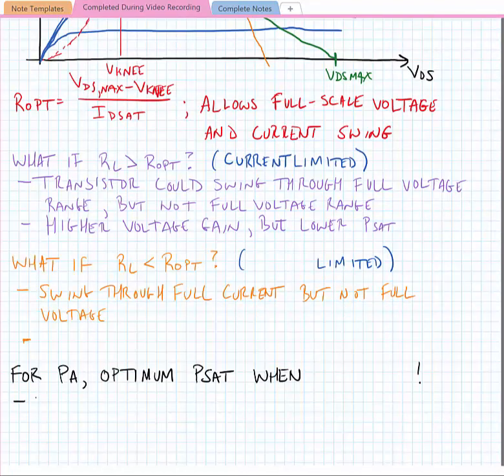Now the load resistance is less than the optimum, so you might also expect that it would have lower voltage gain and lower saturated power. Because it can swing through the full current but not the full voltage, they call this one voltage limited.